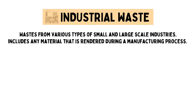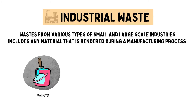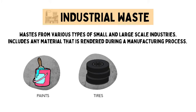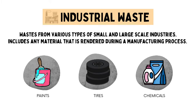Waste from various types of small and large-scale industries are called industrial waste. Industrial waste includes any material that is rendered during a manufacturing process. For example, paints, tires, and chemicals can be classified as industrial waste.